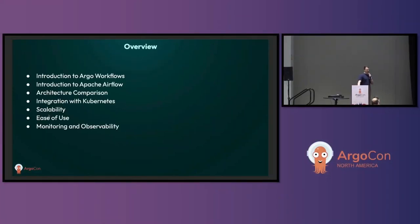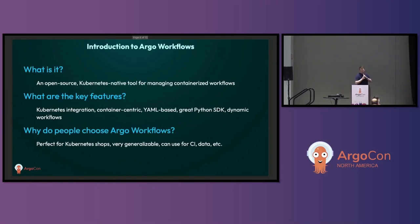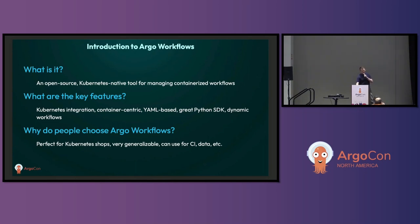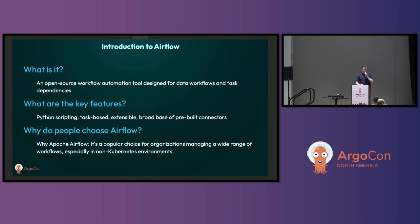This is going to be a little bit biased, but I want to give Airflow a fair shake. So what is Argo Workflows? Argo Workflows is an open source Kubernetes-native tool for managing containerized workflows. Key features are the really tight Kubernetes integration. It is YAML-based originally, but there's a great Python SDK available in the community called Hera that I would very much recommend you check out. And why do people choose Argo Workflows? It is perfect for Kubernetes shops, extremely generalizable — you can use it for CI, ML, and a bunch of great stuff.